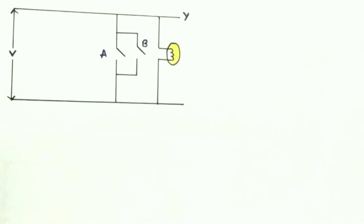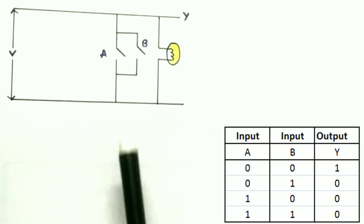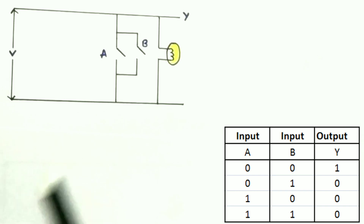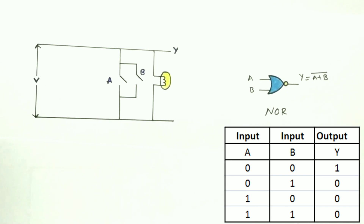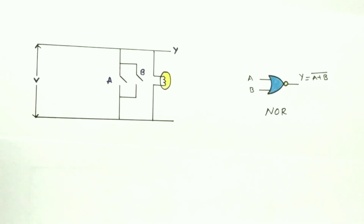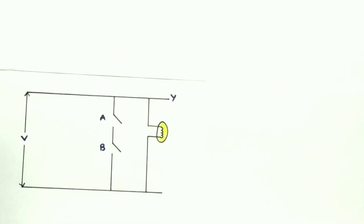In this next network, the parallel switches are connected in a complementary fashion. The bulb will glow only when both switches are open; when either one is closed, the bulb will not glow. This behaves as the complement of OR — a NOR gate — so Y = (A + B)'.